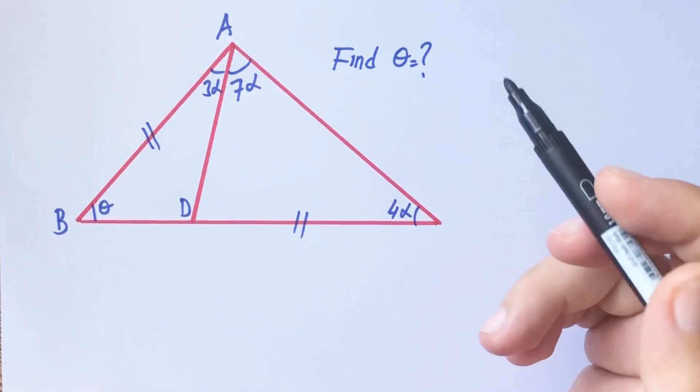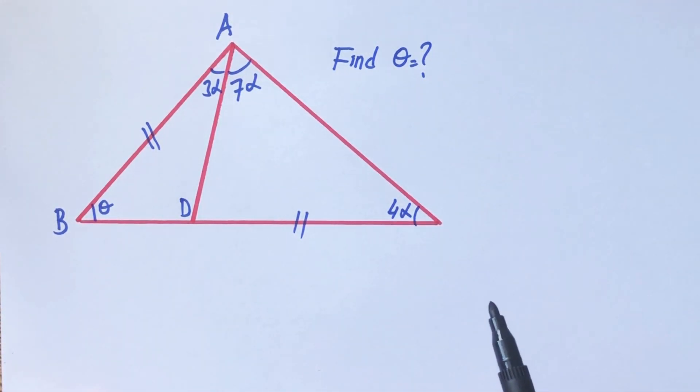Okay, first up, in this kind of spatial question, we need an isosceles or equilateral triangle. Therefore, I want to create an isosceles triangle.